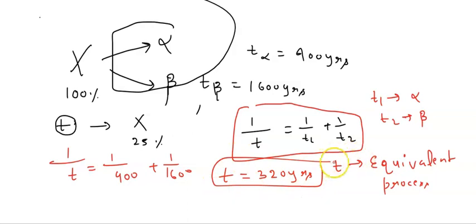What does it mean? 1 upon t equals 1 upon t1 plus 1 upon t2. We calculated the half-life of the equivalent process, which is 320 years. This means initially the substance is 100%, so after 320 years, the amount remaining will be 50%, because t is the half-life of the equivalent process.